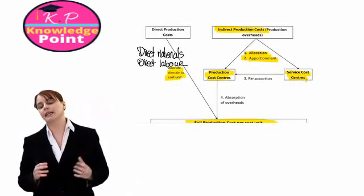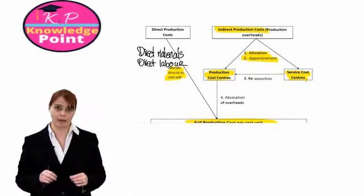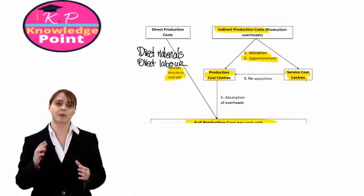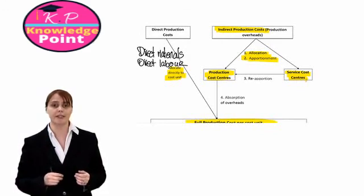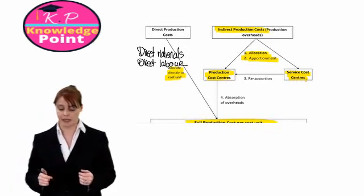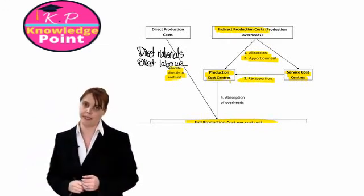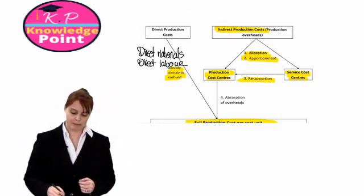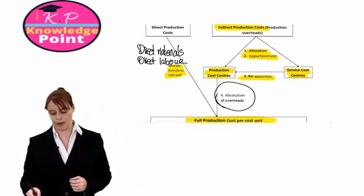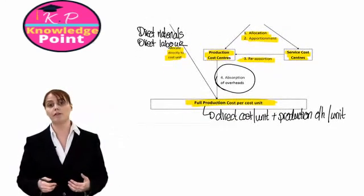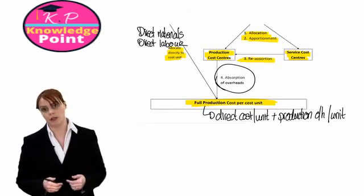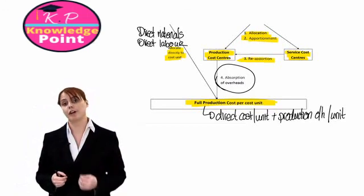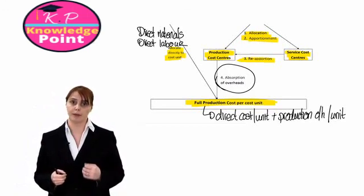Now we'll see in later sessions, once we get to this point, we do have to move the costs a little bit between the service cost centres and the production cost centres. And that will be our step three reapportionment. After we've gotten to that point, we're going to find some way to absorb our overheads into our cost unit. Or in other words, calculate our production overhead cost per unit.